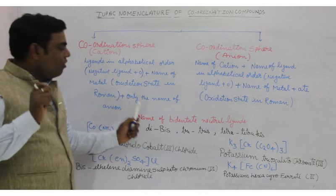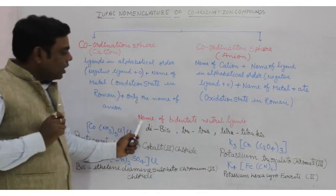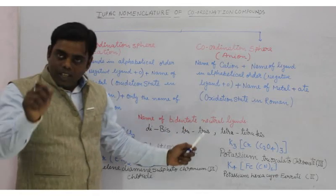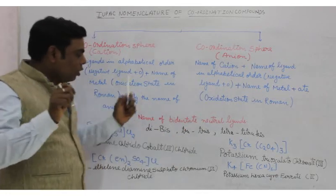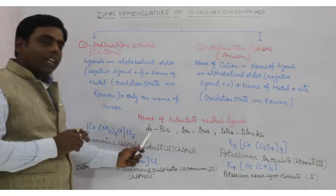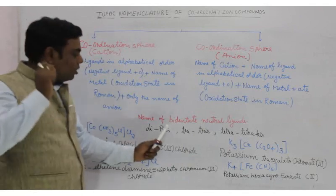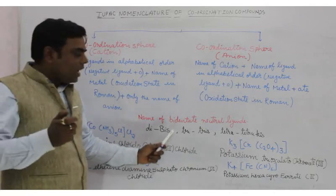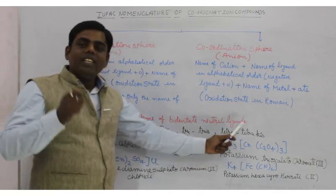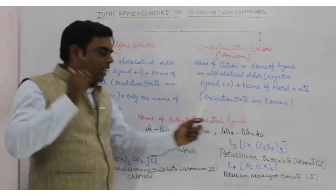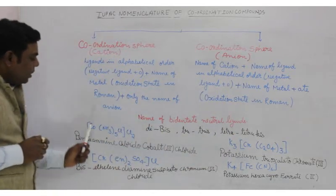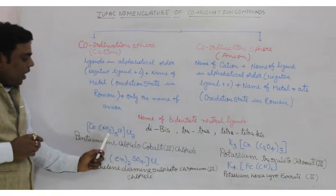For neutral ligands, if there are two, you write 'di'; if there are three, you write 'tris', and so on, using multiplicative prefixes.